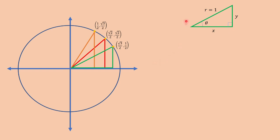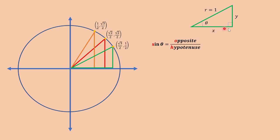In reference to this right triangle here, from the unit circle, the radius is equal to 1 because this is a unit circle. This would be the adjacent side, and this is the opposite side.